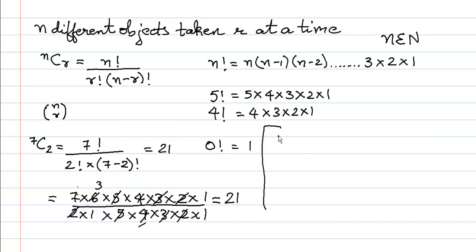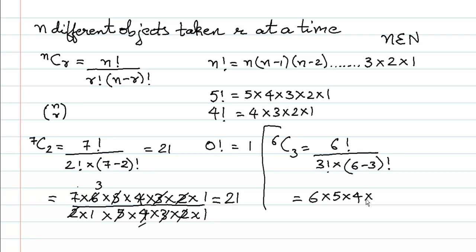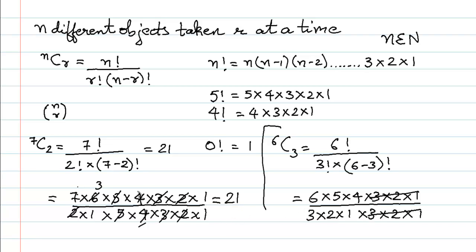Let us take another example: 6C3. We write this as 6 factorial upon 3 factorial multiplied by (6 minus 3) factorial. So 6 factorial is 6 into 5 into 4 into 3 into 2 into 1, divided by 3 factorial which is 3 into 2 into 1, multiplied by 3 factorial again which is 3 into 2 into 1. The 3 into 2 into 1 in the denominator cancels with 3 into 2 into 1 from 6 factorial.